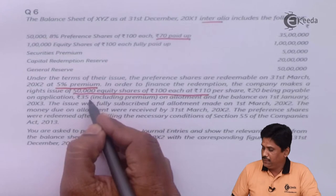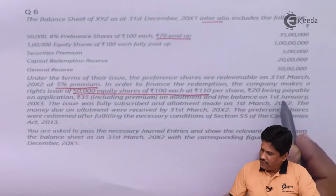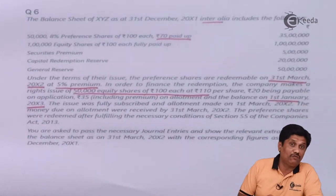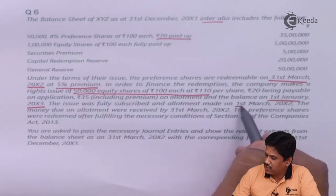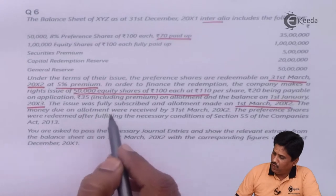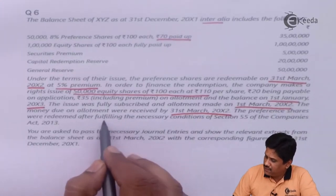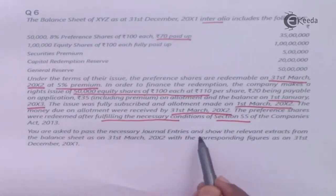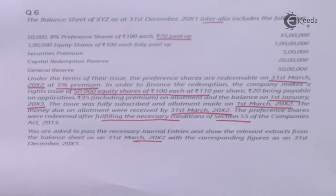So the replacement amount is Rs 30 per share. Redemption is on 31st March 20X2; any money collected before that date counts as replacement. The issue was fully subscribed and allotment was made on 1st March 20X2. The money due on allotment was received by 31st March 20X2. The preferences were redeemed after fulfilling necessary conditions under Section 55 of Companies Act 2013.